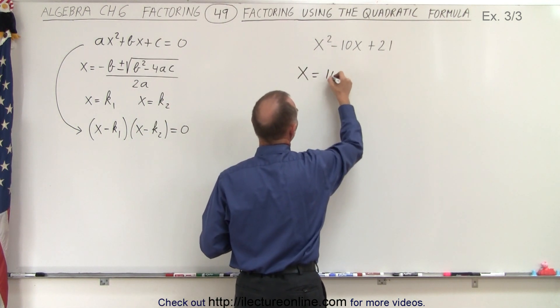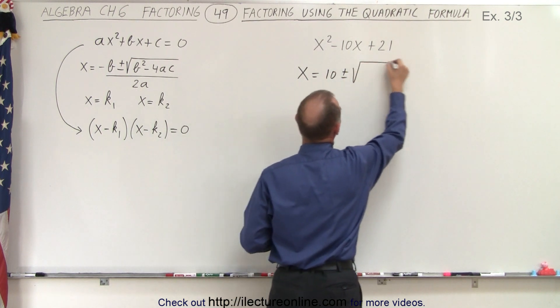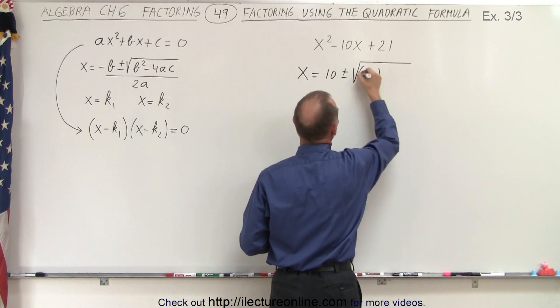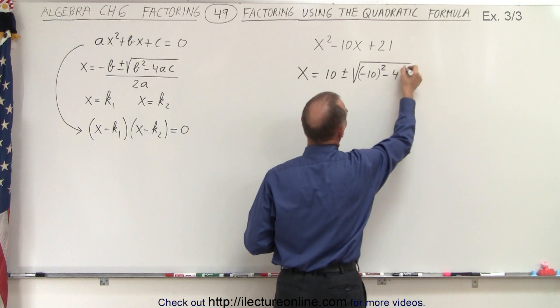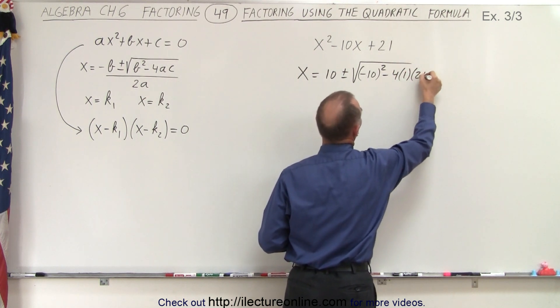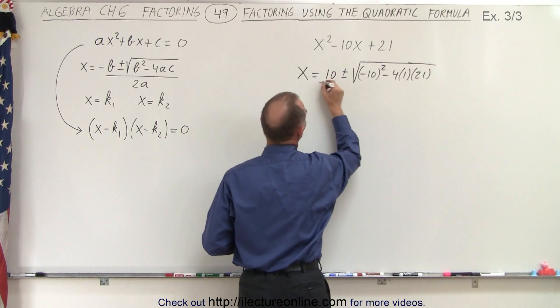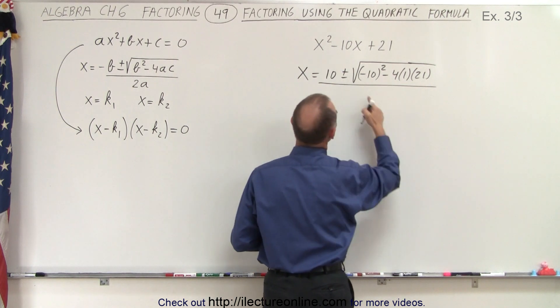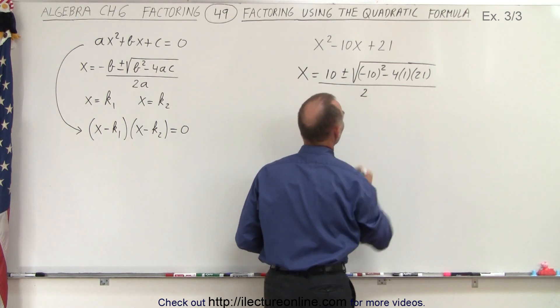So we can write that x is going to be equal to the negative b, which is 10 plus or minus the square root of negative 10 squared, b squared minus 4 times a times c. The whole thing divided by 2a or 2 times 1.